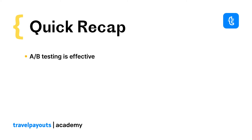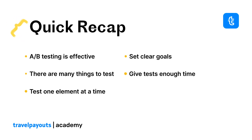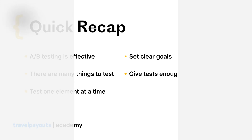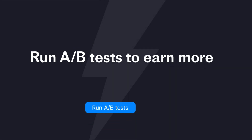Let's wrap things up. A-B testing is a great way to streamline your affiliate campaigns. There are a lot of things you can test, including landing pages, offers, tools, and so on. Make sure you test one element at a time, set clear goals, and give your tests enough time to run. In the next tutorial, we'll explain how cookies work in affiliate marketing. Now, go ahead and run A-B tests to eliminate guesswork and accelerate your earnings.